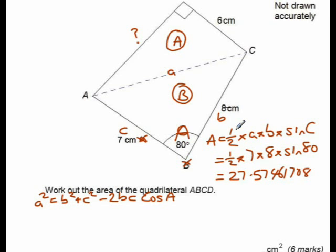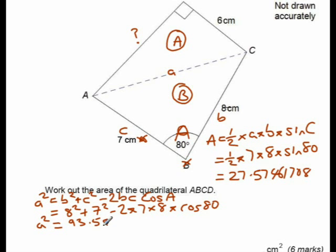So, put those numbers into here, we get B squared, which is 8 squared, C squared, which is 7 squared, minus 2 times 7 times 8 times the cos of 80. And again, if I type that into the calculator, I'll get A squared is equal to 93.5514041.